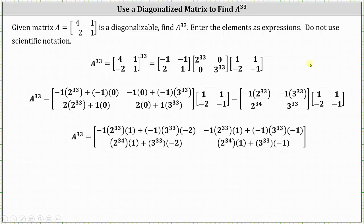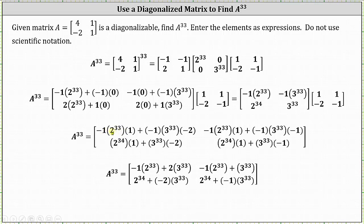Now we find the last product. In row one column one: negative two to the 33rd times one, plus negative three to the 33rd times negative two, giving negative two to the 33rd plus two times three to the 33rd. In row one column two: negative two to the 33rd times one plus negative three to the 33rd times negative one, giving negative two to the 33rd plus three to the 33rd. In row two column one: two to the 34th times one plus three to the 33rd times negative two, giving two to the 34th minus two times three to the 33rd. In row two column two: two to the 34th plus negative one times three to the 33rd.